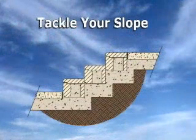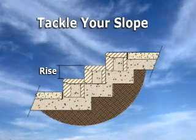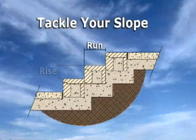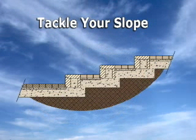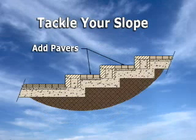On steep slopes, keep the blocks tight together. With Allen Block, you get an 8-inch rise and a 12-inch run. On gentle slopes, add pavers or other materials to increase the depth of the tread and the length of the run.